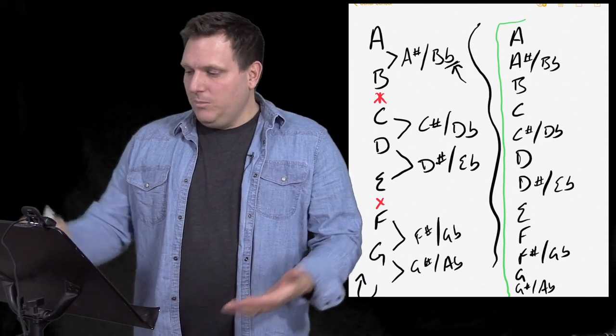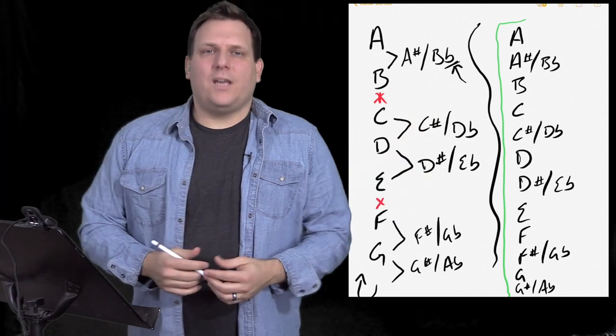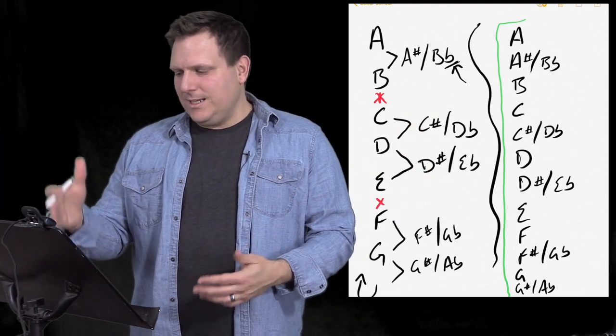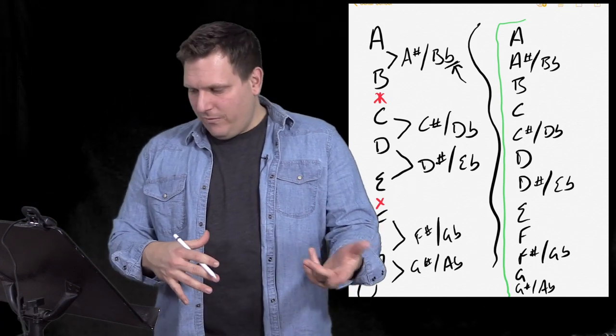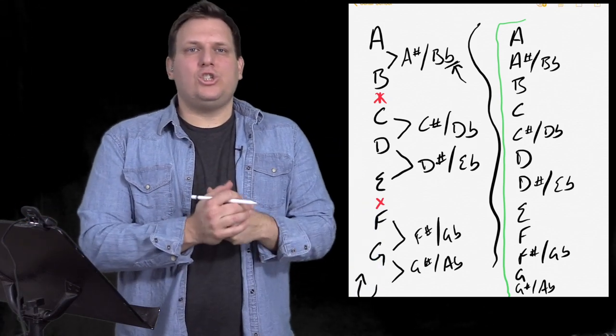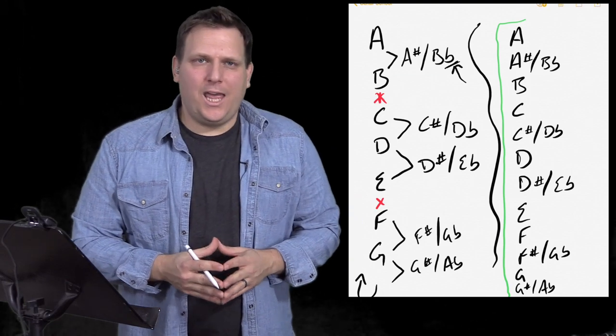So that is the musical alphabet. Let's go through it one more time. A, A sharp, B, C, C sharp, D, D sharp, E, F, F sharp, G, G sharp. And then we go right back to A.